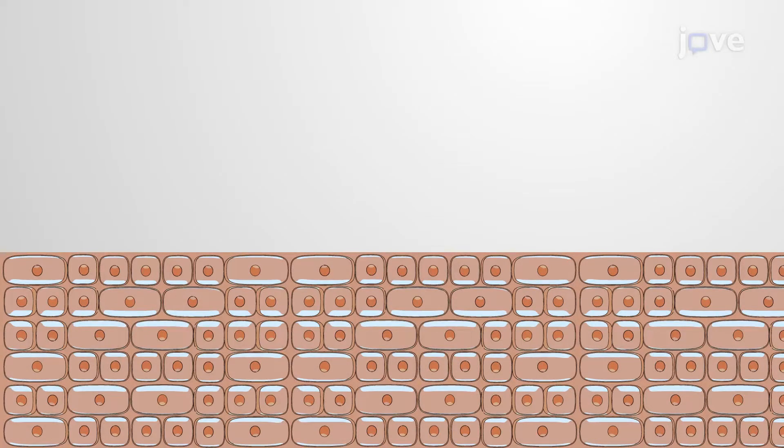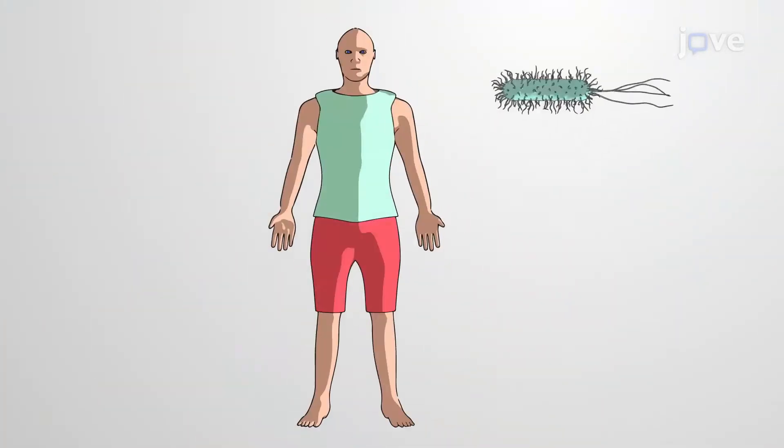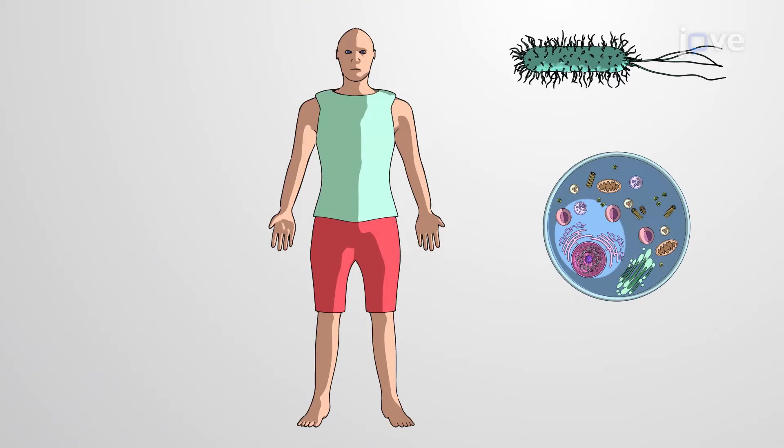Cells are the building blocks of every organism, from single-celled bacteria to multicellular humans, and can be classified into two broad categories: prokaryotic and eukaryotic.